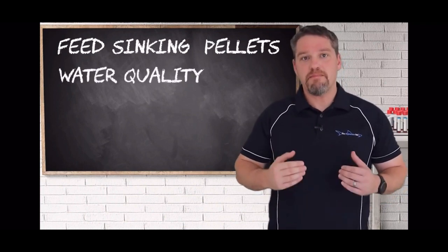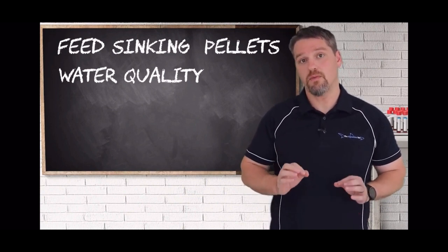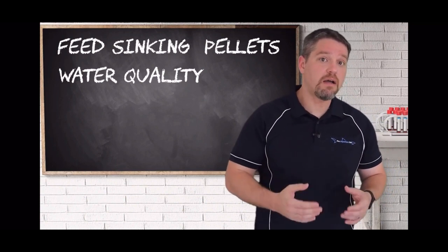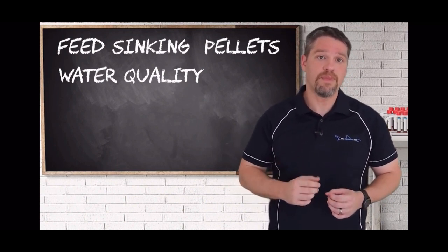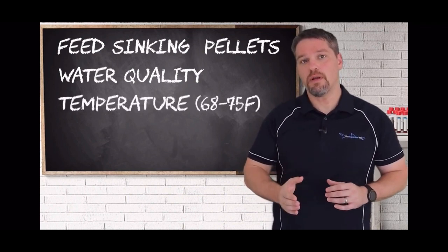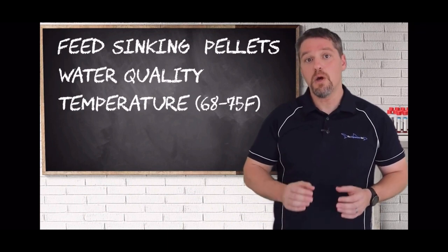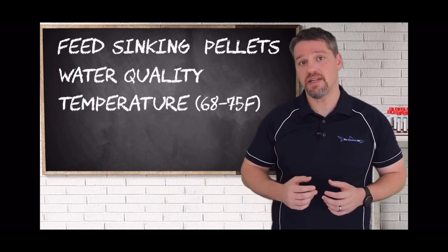The next preventative measure is maintenance of optimal water quality and regular testing of your water parameters. We want to make sure that we have maintenance of a healthy biological filter in order to ensure that we have optimal water quality. The next thing that's incredibly important is optimal temperature requirements for the species that you're keeping. Most goldfish that are kept thrive in that range of 20 to 24 degrees Celsius.